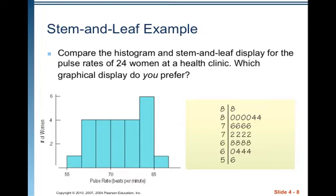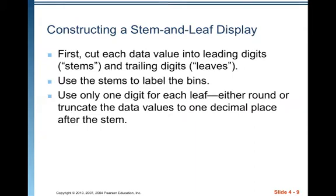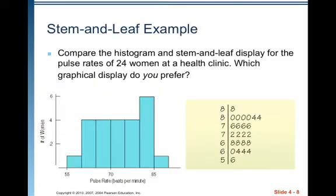Compare the histogram and stem and leaf display for the pulse rates of 24 women at a health clinic — which graphical display do you prefer? To construct a stem and leaf display, cut each data value into leading digits (the stems) and trailing digits (the leaves). On the left of the vertical line you've got 8, 8, 7, 7, 6, 6, 5 — those represent the tens digit and are the stems. The leaves on the right represent the ones digit. So the first value on top represents a pulse of 88.